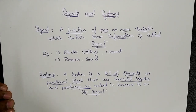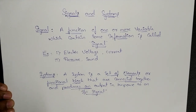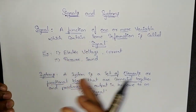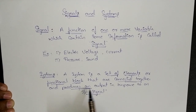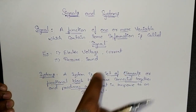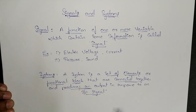In our houses, colleges, or workplaces, we have computers and desktops — we call them systems. Desktops are systems where the monitor, keyboard, printer, and CPU are all connected in a systematic manner; those are functional blocks. These components are interconnected to produce an output in response to an input signal. For example, if people press the power button, the desktop turns on — input is given and we get some output. We call it a system.